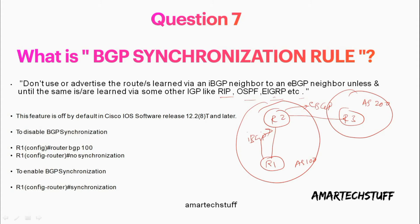In practical or real environments, this rule is mostly disabled. You can mention that we can disable this rule by going into BGP configuration — under router BGP 100 (the AS number) — and giving the command 'no synchronization'. This disables BGP synchronization. If you want to enable it, the command is 'synchronization'. This feature is off by default in Cisco IOS software release 12.2(8) and later. After that release, this feature is disabled by default, but it is still a very popular interview question.